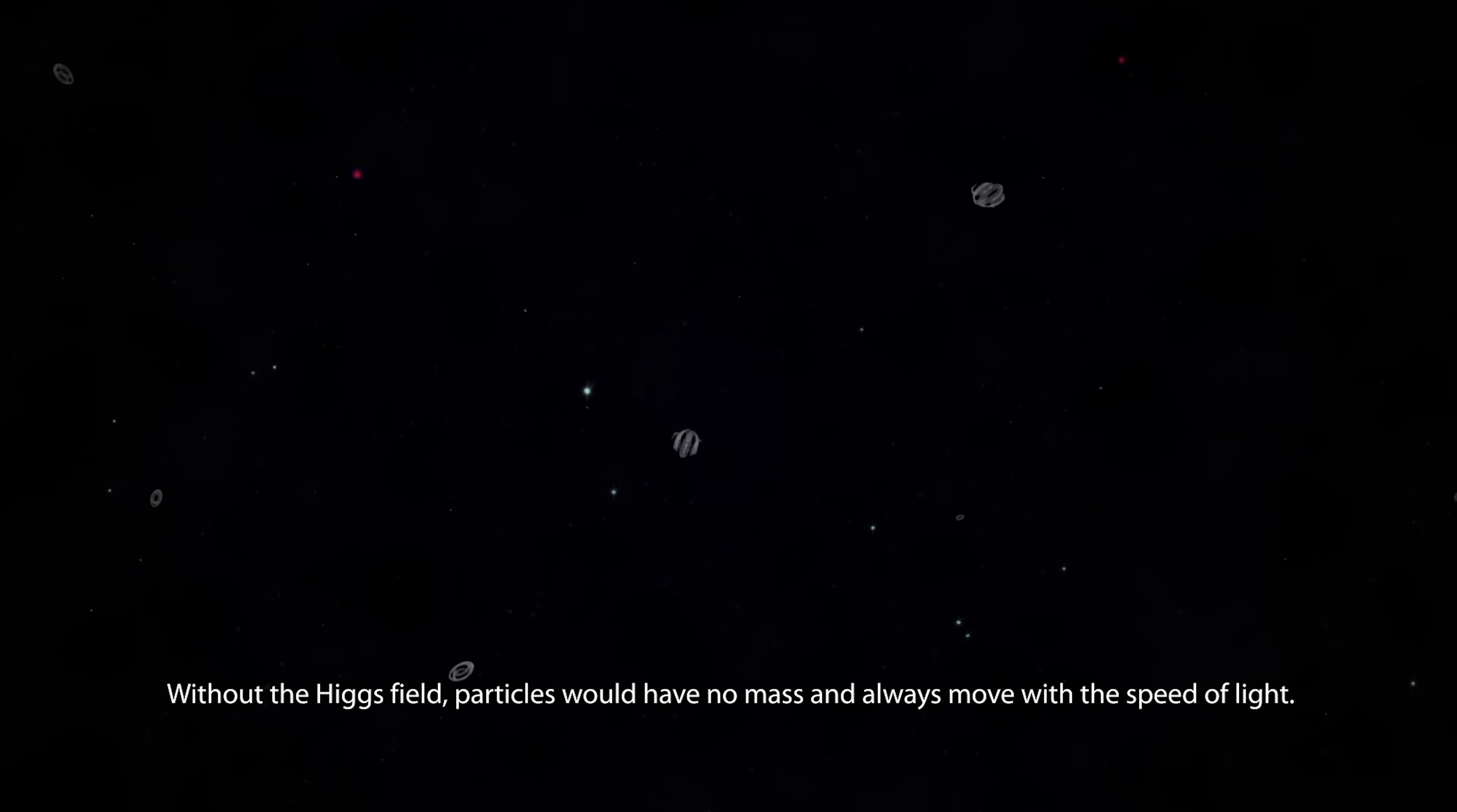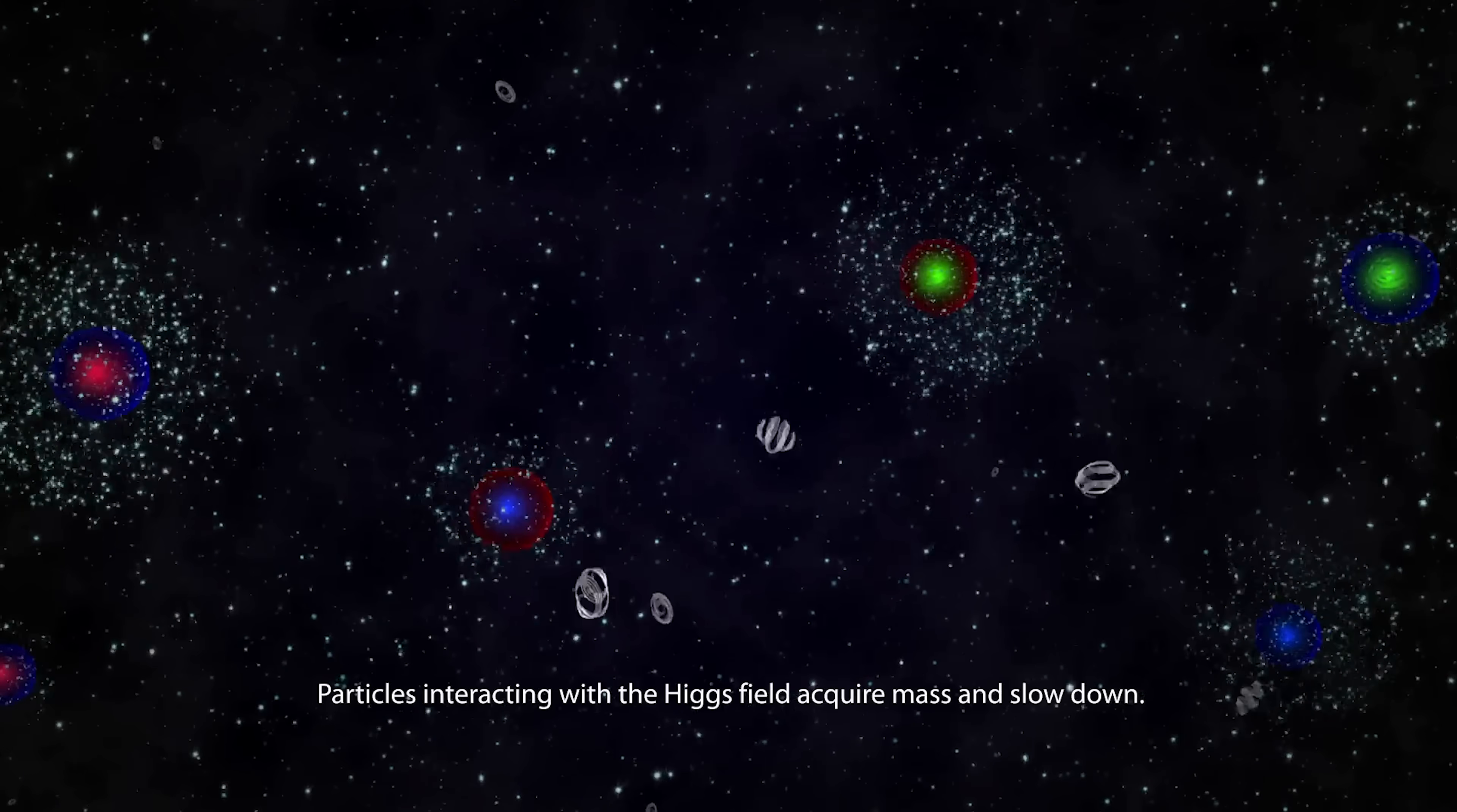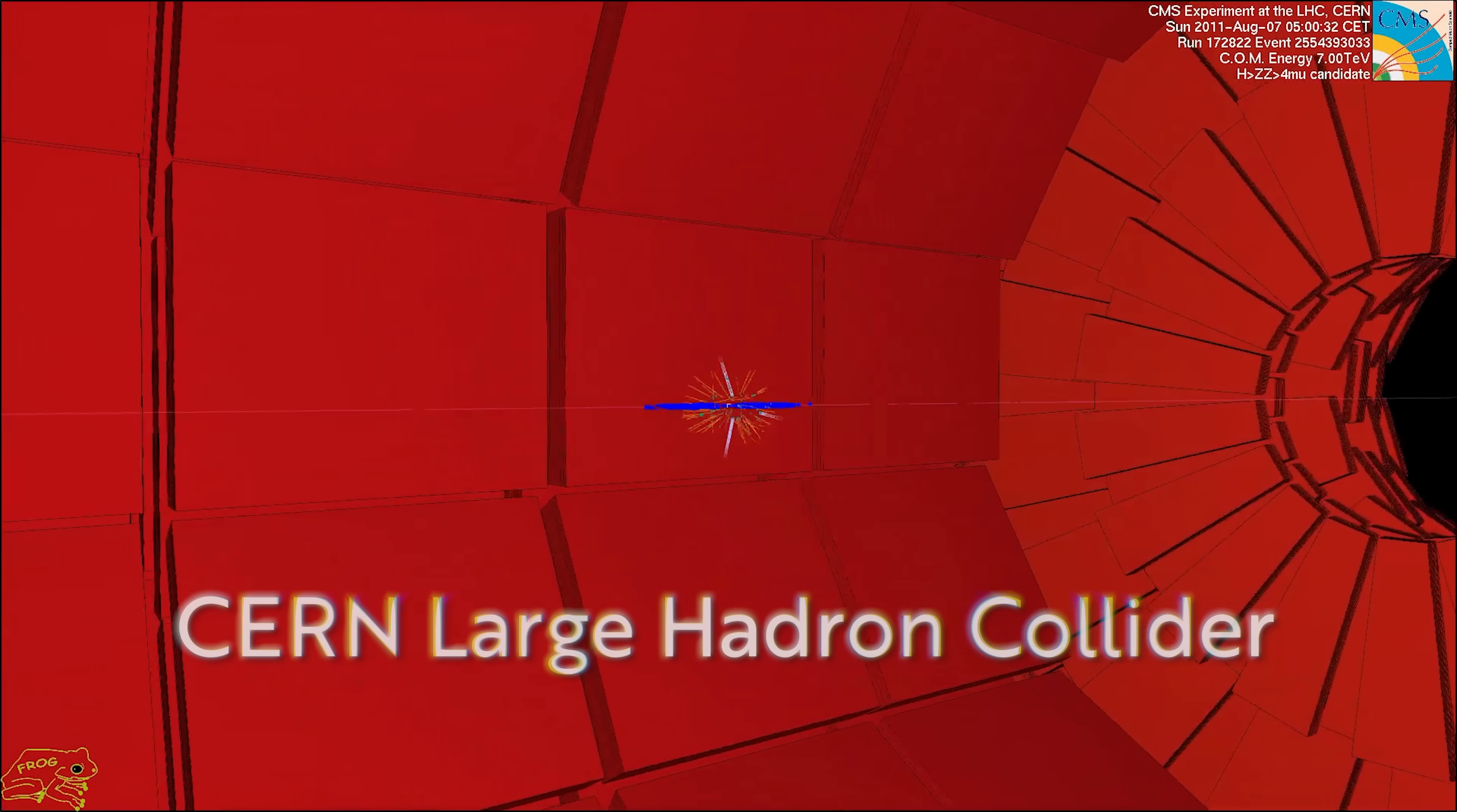The Higgs field is a fundamental field spread throughout the entire universe. We call excitations of the Higgs field the Higgs boson, and in our current model of physics, particles acquire mass by interacting with the Higgs field. Confirming the existence of the Higgs field required detecting the associated particle, which we call the Higgs boson. This was achieved in 2012 at CERN's Large Hadron Collider.